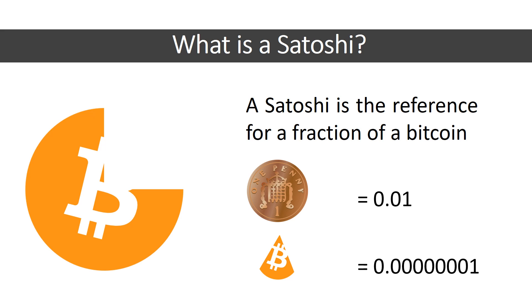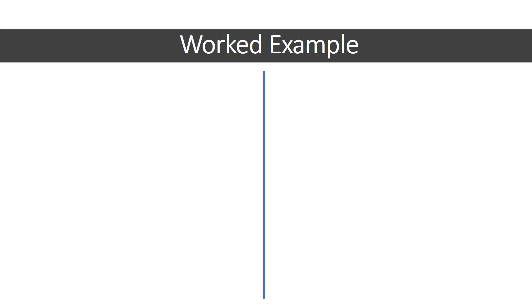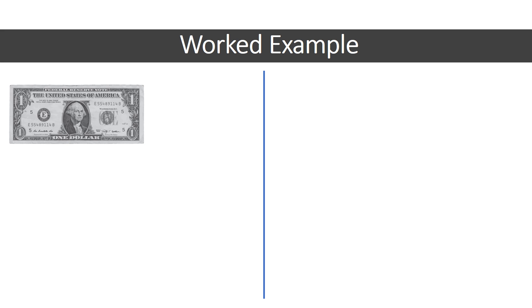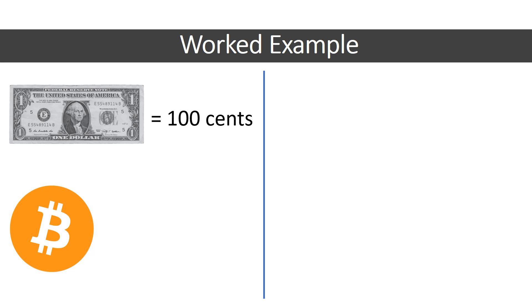Let's use a real-world example, as the previous slide with all those decimals can look rather confusing. If we take the US dollar, we know one dollar equals 100 cents. Likewise, one Bitcoin is equal to 100 million satoshis.